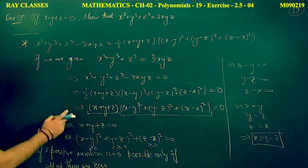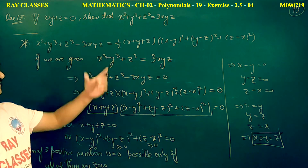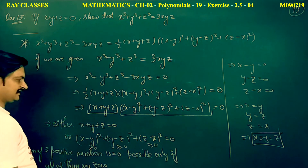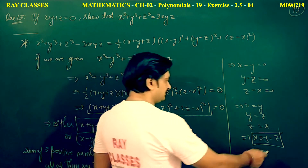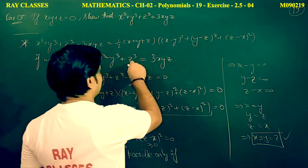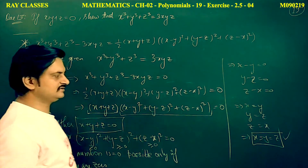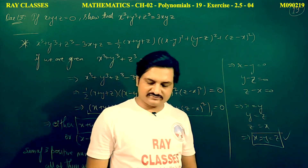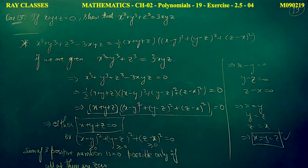This has been asked many times in JEE. When this relation holds, either the sum of all three is 0, or all three are equal. That is the combined analysis of question 12 and 13. Now let me write the next question on the board.